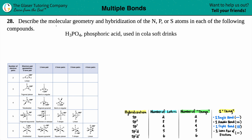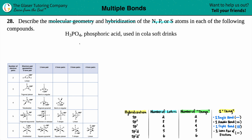Problem 28: describe the molecular geometry and hybridization of the nitrogen, phosphorus, or sulfur atoms in each of the following compounds. In this one we have H₃PO₄, which is phosphoric acid, used in cola soft drinks. We just have to predict what's going on with the molecular geometry and hybridization of specifically phosphorus, since there are no nitrogens or sulfurs in H₃PO₄.